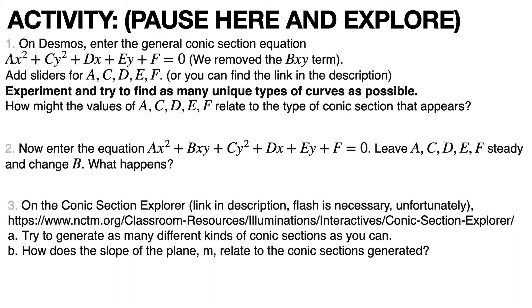Here are the questions. Number one, on Desmos, enter the general conic section equation ax squared plus cy squared plus dx plus ey plus f equals 0, and we removed the bxy term, the xy term. Add sliders for a, c, d, e, and f. You can find a link that'll make this easier for you in the description.